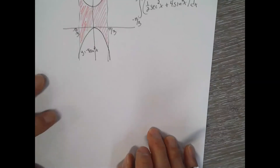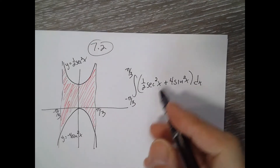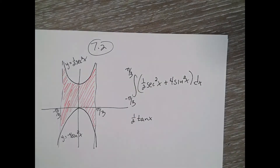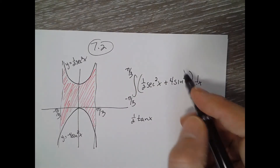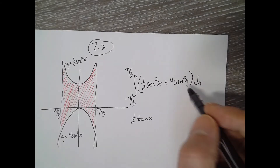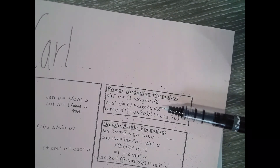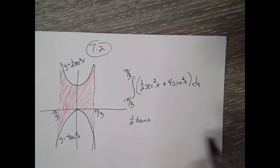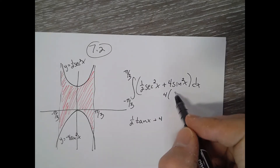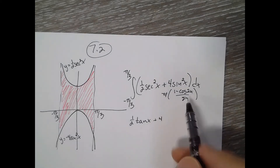The antiderivative of secant squared is just tangent, so we get one-half tangent x. For sine squared, we don't know the antiderivative directly, but using the power reduction formula, sine squared x equals 1 minus cosine of 2x over 2. So with the 4 out front, we have 4 times 1 minus cosine of 2x over 2, and the 4 over 2 becomes just 2 times 1 minus cosine of 2x.